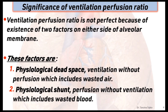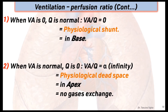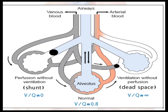This ratio is not perfect because of the existence of two factors on either side of the alveolar membrane. The first is physiological dead space, which means ventilation without perfusion, which includes wasted air. The second is physiological shunt, which means perfusion without ventilation, which includes wasted blood. In the base of the lung we find physiological shunt, and in the apex physiological dead space.